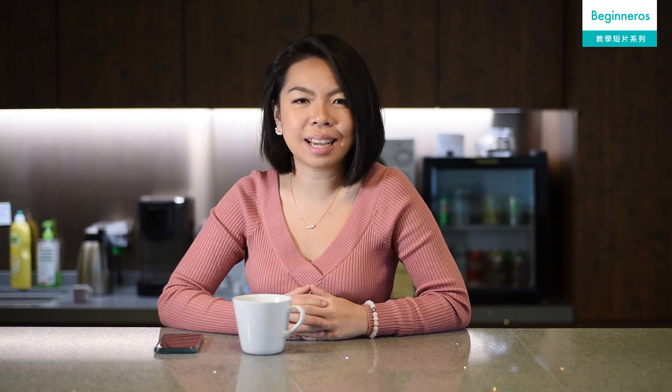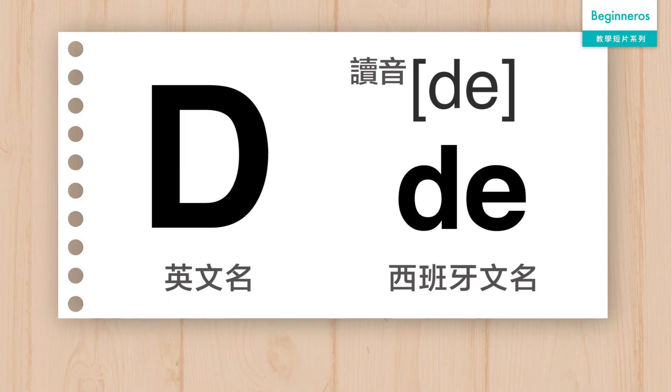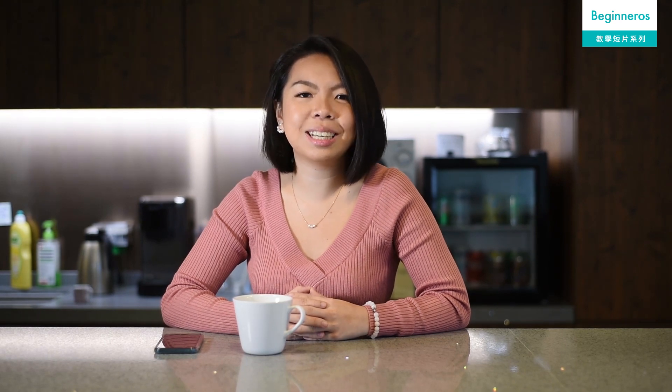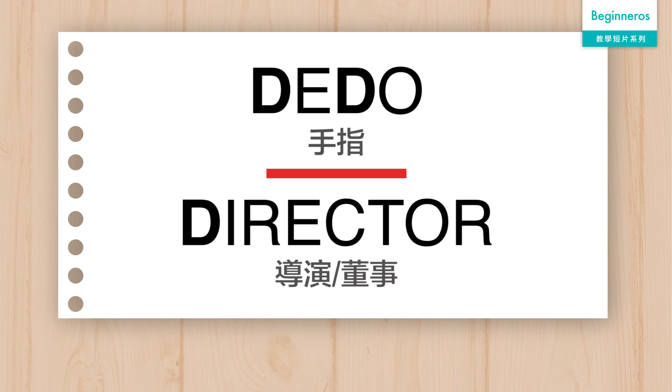而 D 的西班牙文就是 D，而它也屬於一個比較簡單的字母，因為它在任何情況之下讀音也只有一個，就是 D。不過需要留意的就是西班牙文的 D 並沒有英文的 D 那麼重音，而只是輕輕的一個 D。例如 Dedo。